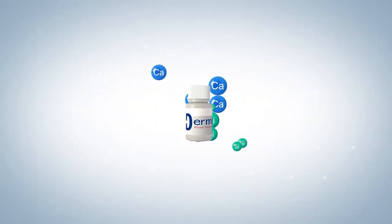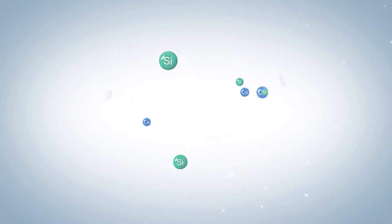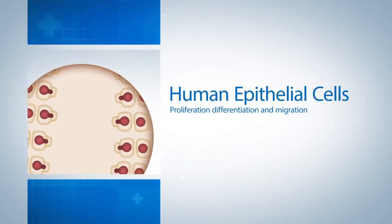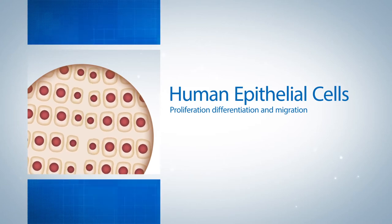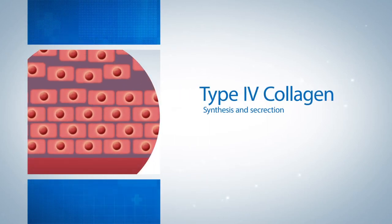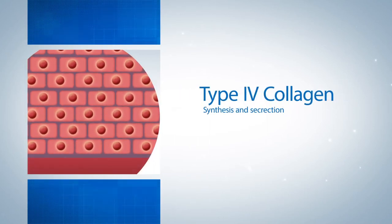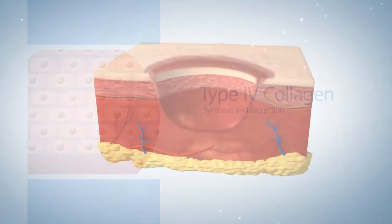Dermalyn is clinically approved with significant effects to stimulate proliferation, differentiation, and migration of human epithelial cells. In addition to epidermal growth factor, type 4 collagen is stimulated for synthesis and secretion, so that granulation tissue is grown.